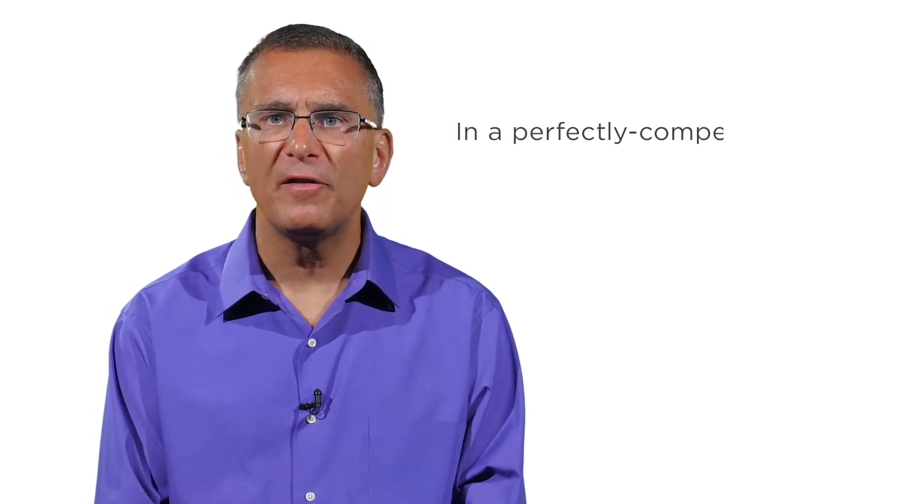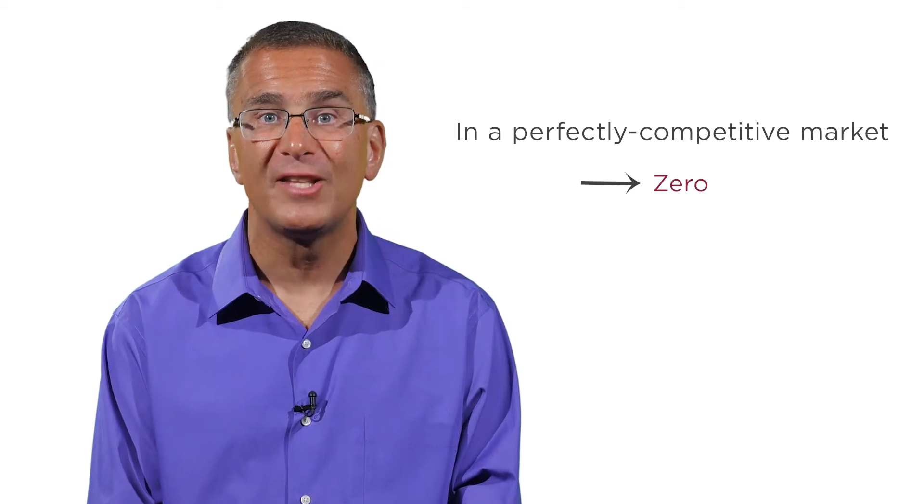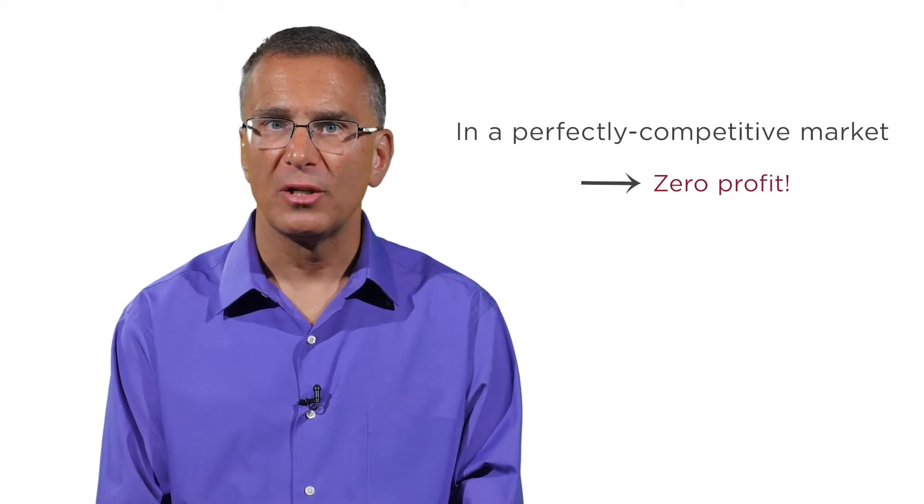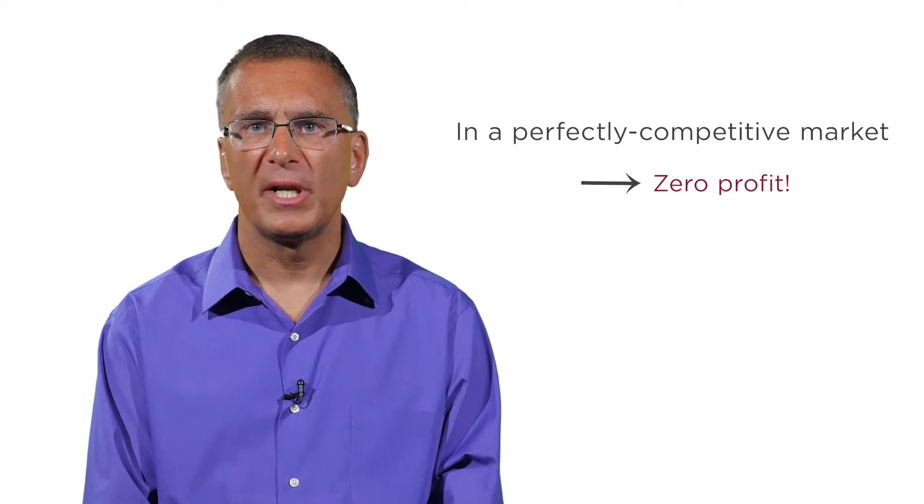But the implication of this simple decision rule for firms is quite striking. It means that in the long run, there will be entry and exit into a perfectly competitive market until all firms make zero profit. This is quite a bold prediction. Let's think through how this would work with an example.